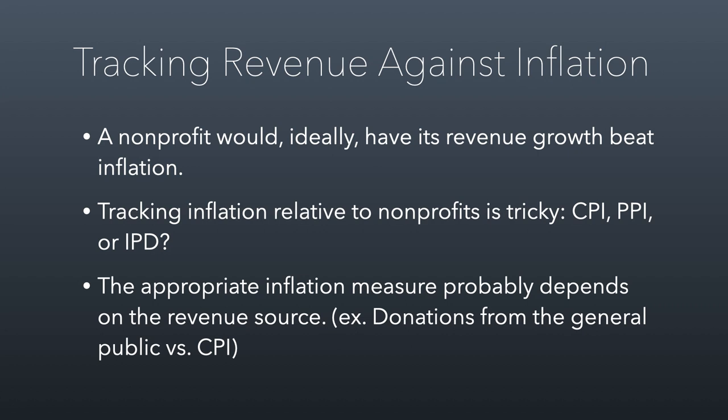The PPI is the Producer Price Index, and that's a basket of goods based on what producers buy. The IPD is called the Implicit Price Deflator, and that is actually a measure for government agencies — the types of things that government agencies typically buy. Nonprofits don't fit cleanly into any one of those categories, so if you're not sure which inflation measure to use, the best one is based on where the revenue comes from. If you rely heavily on donations from the public, use CPI; if you rely heavily on corporate grants, use the PPI; and for government grants, use the IPD.